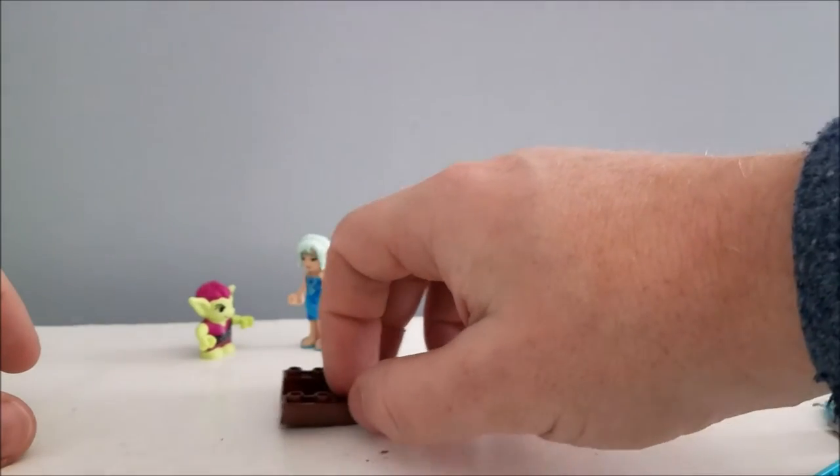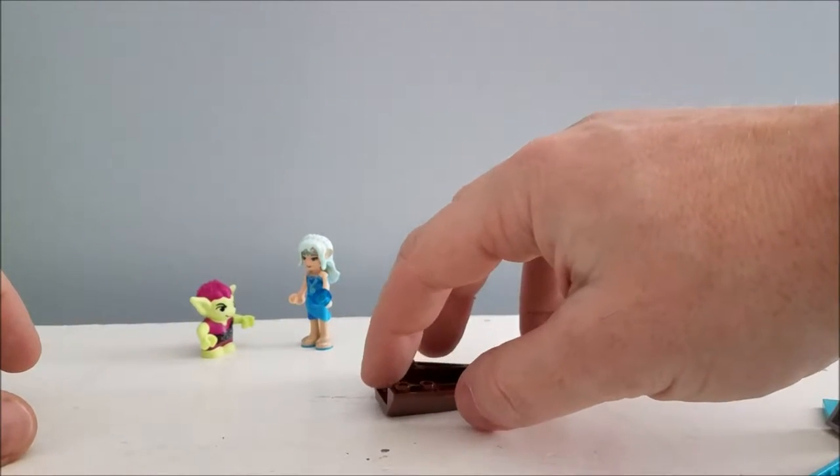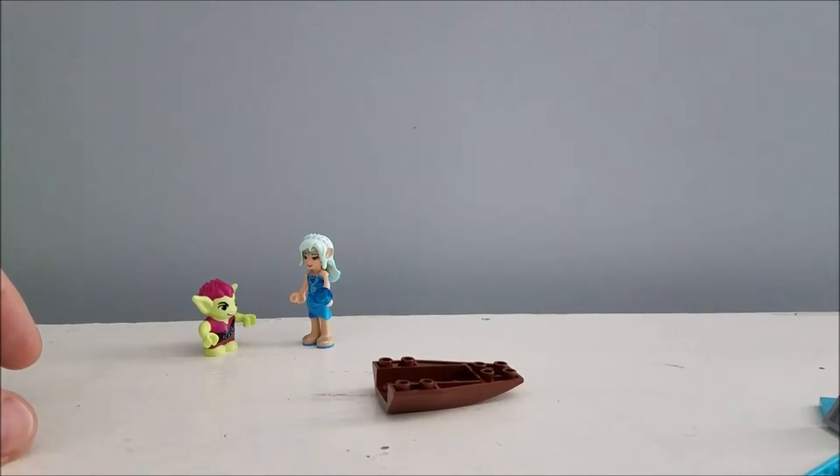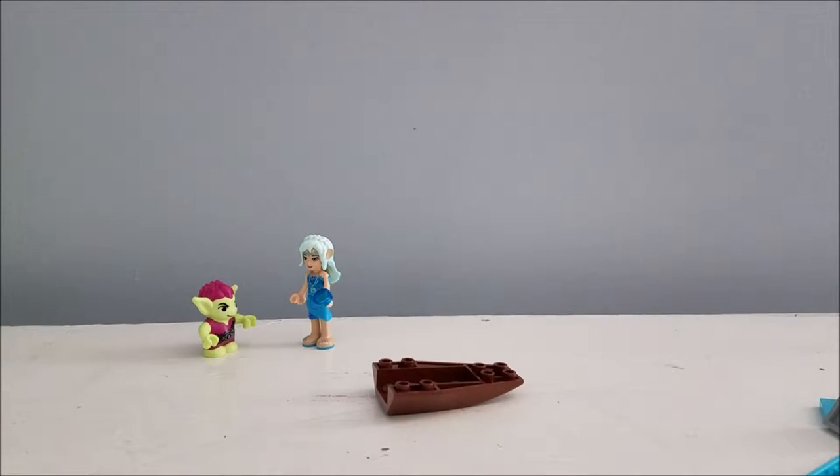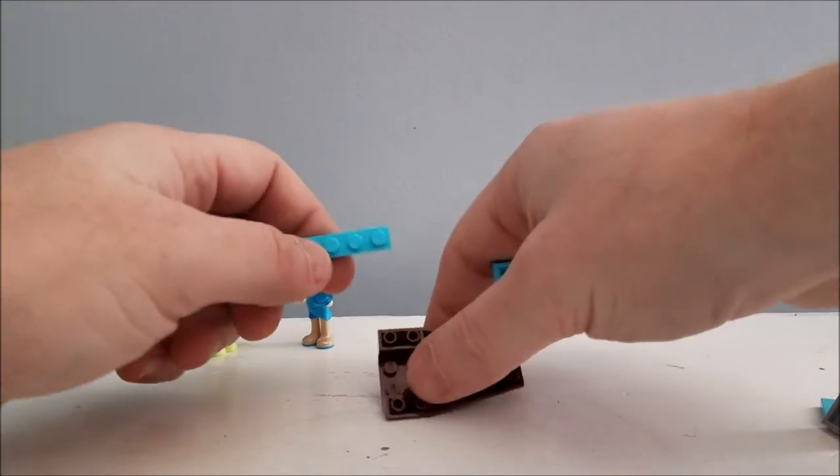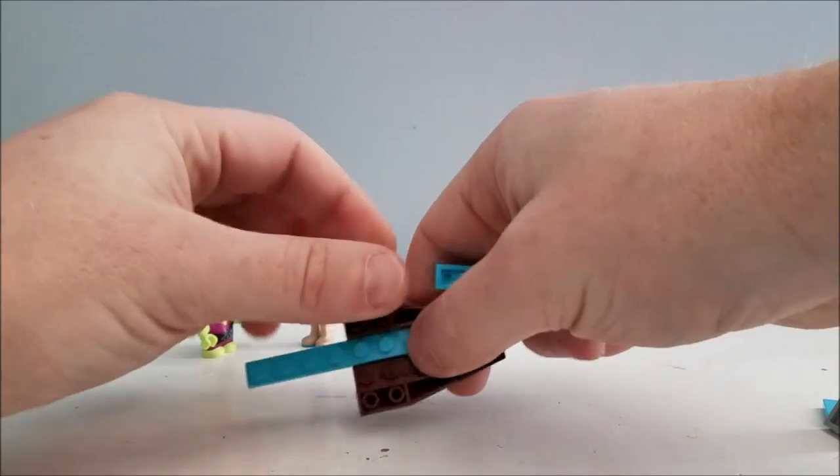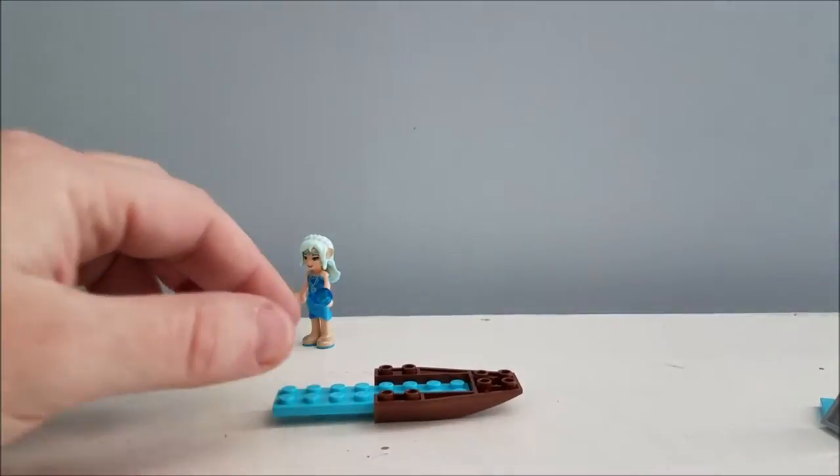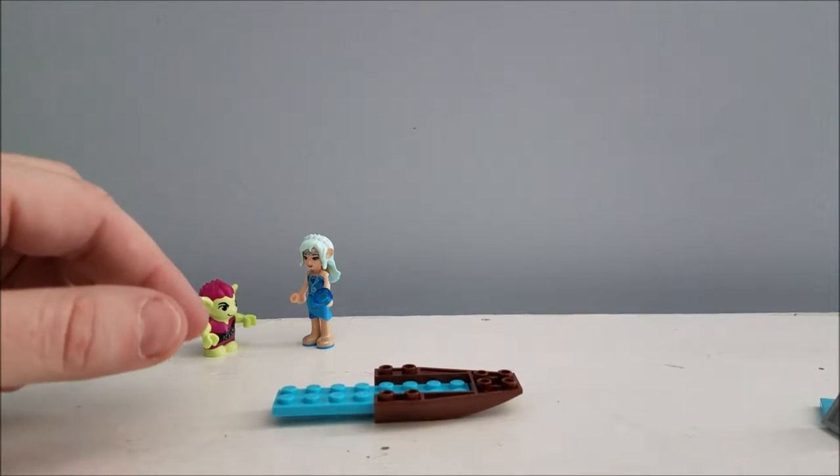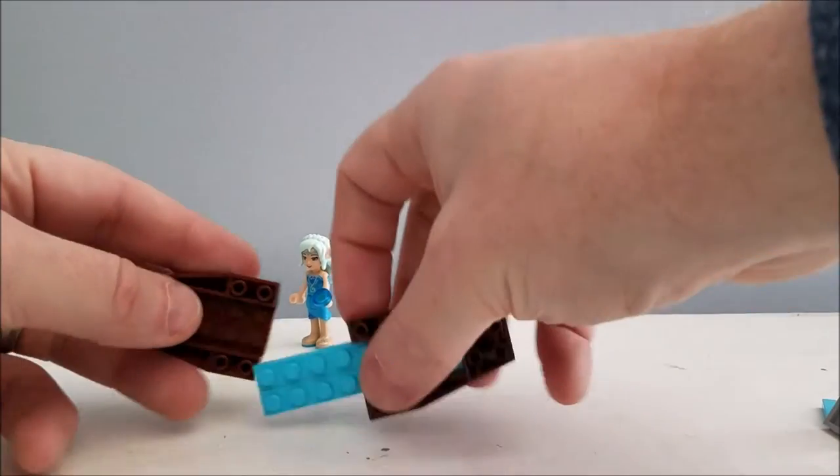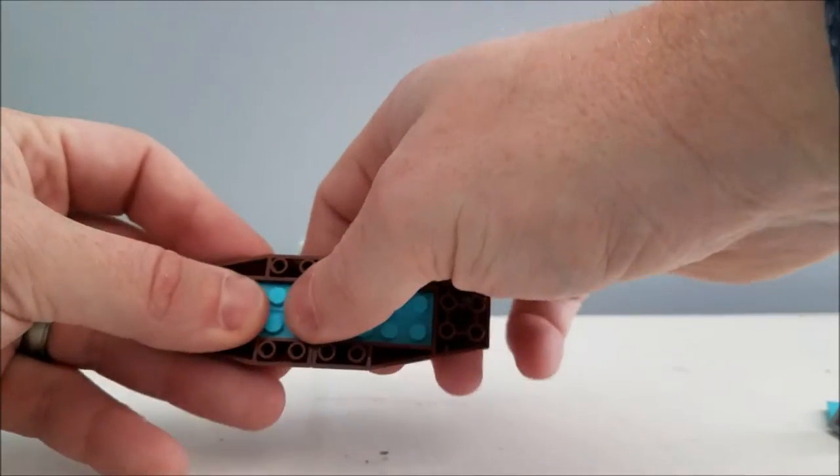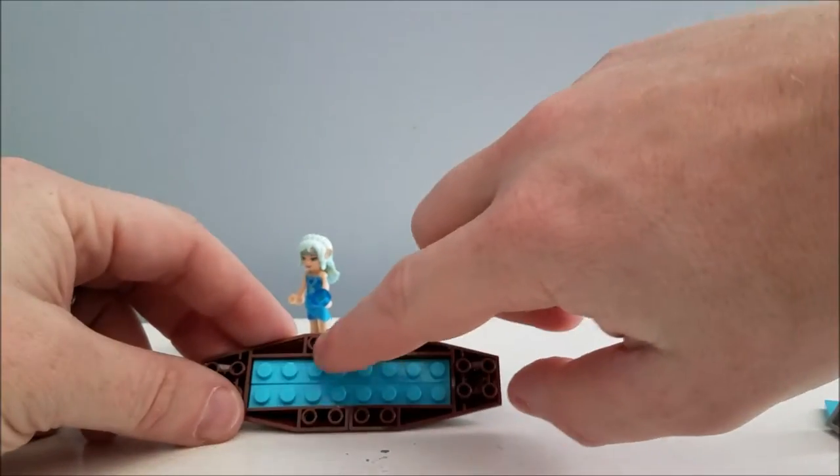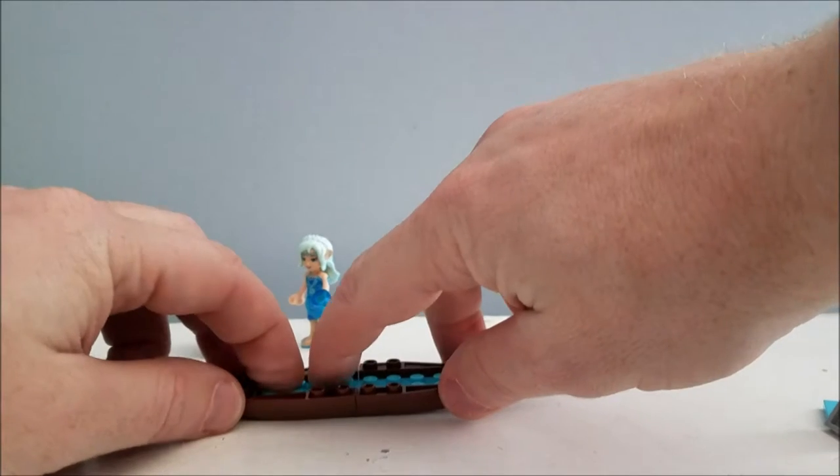Now we're gonna start building the first part. This clips onto here like this, and this clips onto here like that. And I believe this is going to be our boat for Naida. I really like the pretty blue against the brown - I think that's a very pretty color change.